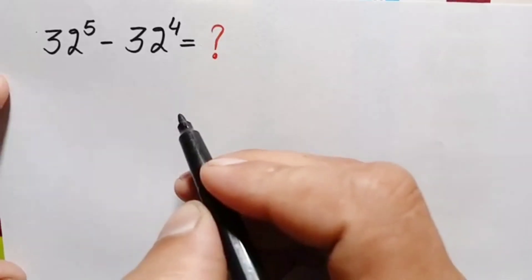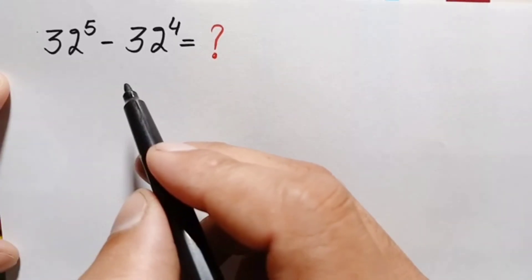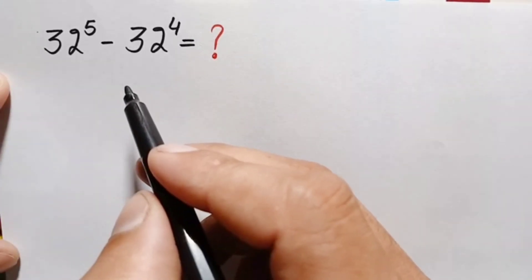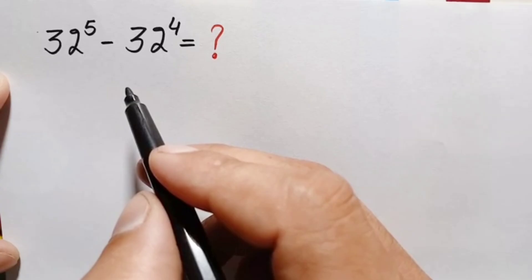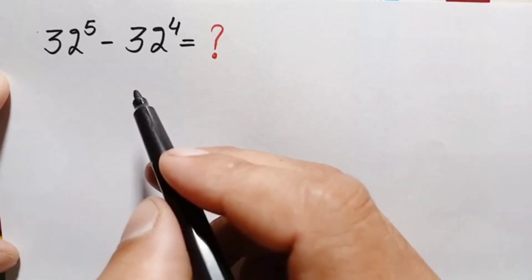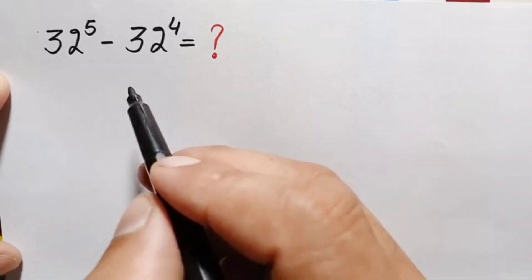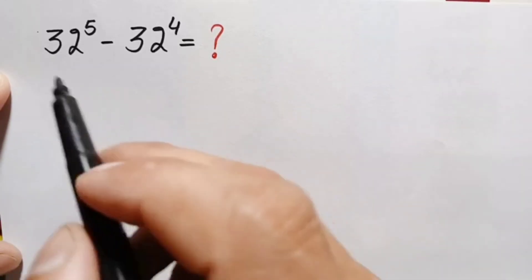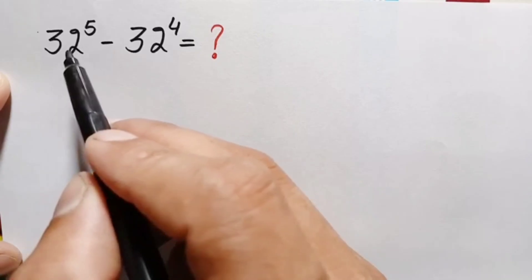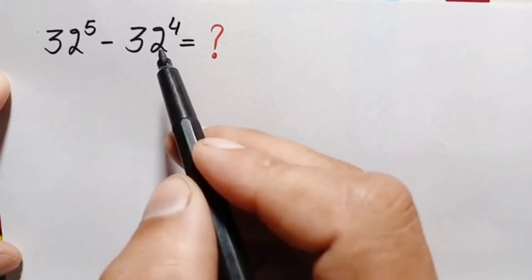Hello everyone, you are welcome. We will solve this beautiful exponential math problem without using a calculator, using different exponential identities. The problem is 32 raised to power 5 minus 32 raised to power 4.